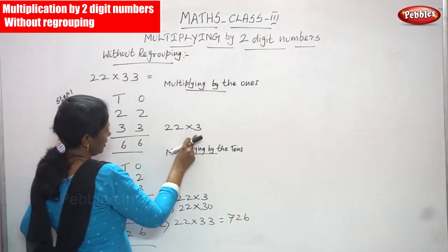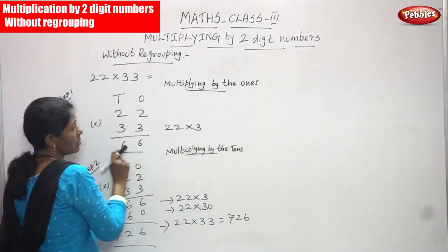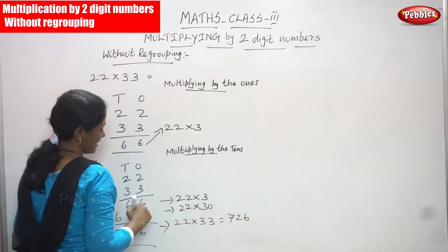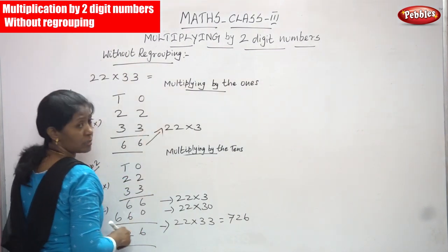So 22 into 3: 2 threes are 6 and 2 threes are 6. So 22 into 3 you can get 66. This is multiplying by the 1's. Step 1 is over.